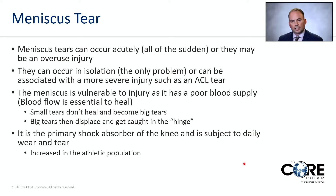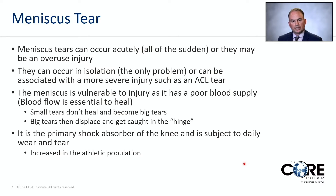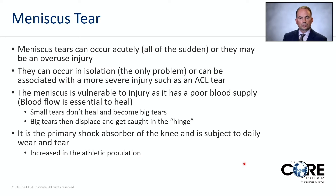Meniscus tears can occur acutely — all of a sudden, such as bending down to pick something up off the floor — or during a soccer game where you twist your knee. They can occur in isolation or be associated with a more severe injury such as an ACL tear. The meniscus is a vulnerable structure in the knee based on its poor blood supply. A small tear can become a bigger tear, and those bigger tears can displace and get caught in the hinge joint.